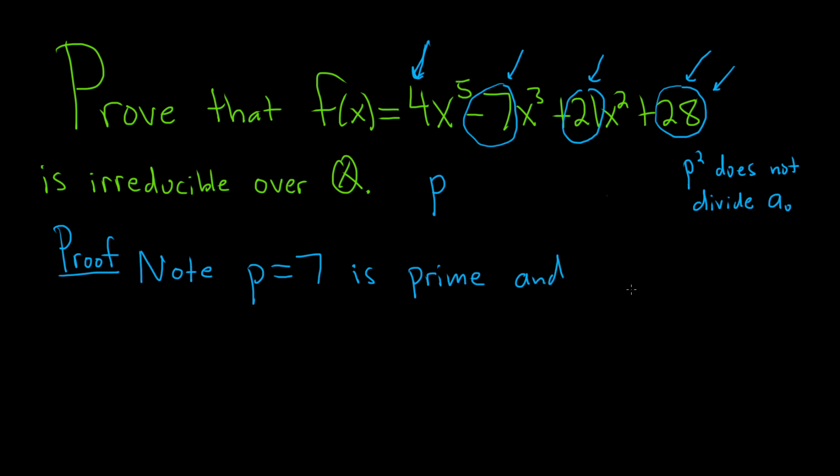And p divides 28, p divides 21, p divides negative 7. But p does not divide 4, and p squared, which is 49, does not divide 28.